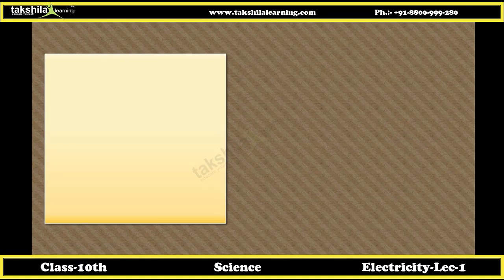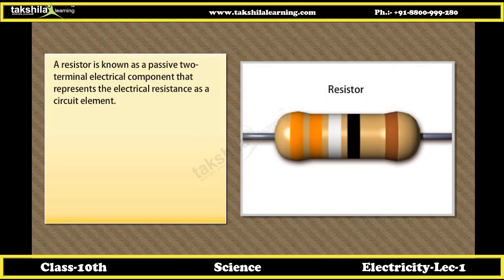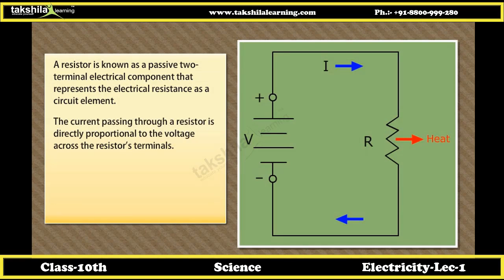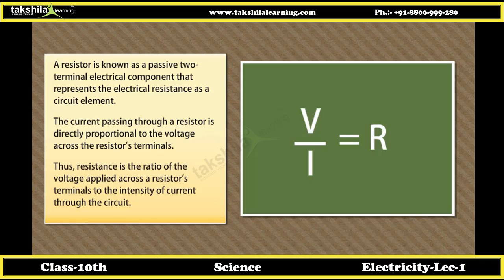Resistance of a system of resistors. A resistor is a passive two-terminal electrical component that represents electrical resistance as a circuit element. The current passing through a resistor is directly proportional to the voltage across its terminals. Thus, resistance is the ratio of the voltage applied across a resistor's terminals to the intensity of current through the circuit.